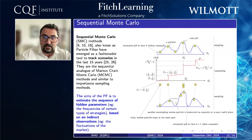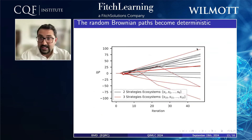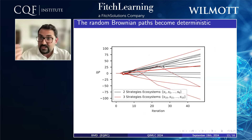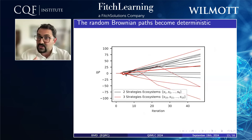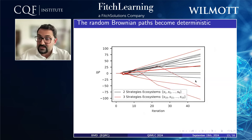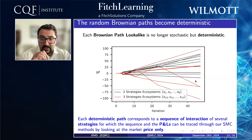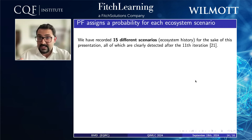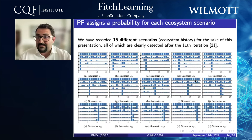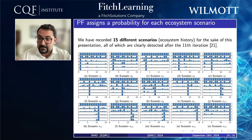Going back to our first slide, each of these paths is now easily recorded in terms of the path of interaction, because we know which kinds of strategies can yield a specific path. When you start your iterations, there's a lot of ambiguity about which ecosystem you're looking at. But as the number of iterations increases, you know more and more about the ecosystem and can say something interesting about the different scenarios. Using our sequential Monte Carlo methods, we tracked 15 different scenarios and were able to show, with high certainty, which ecosystem we were talking about by just looking at the prices.